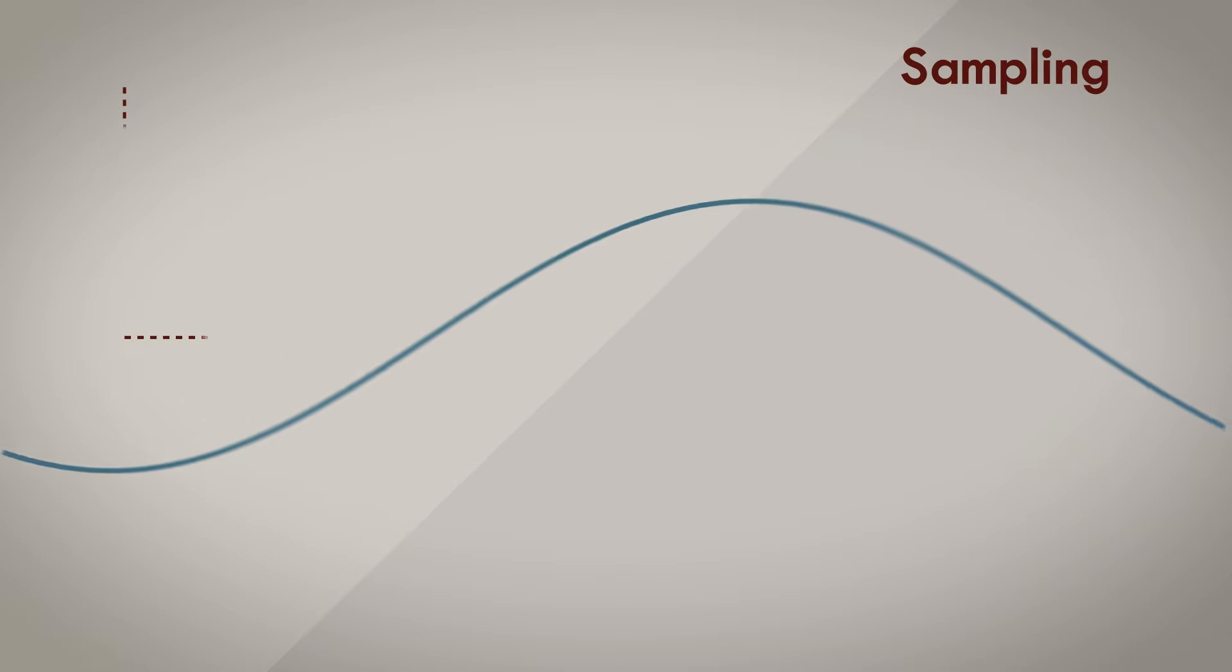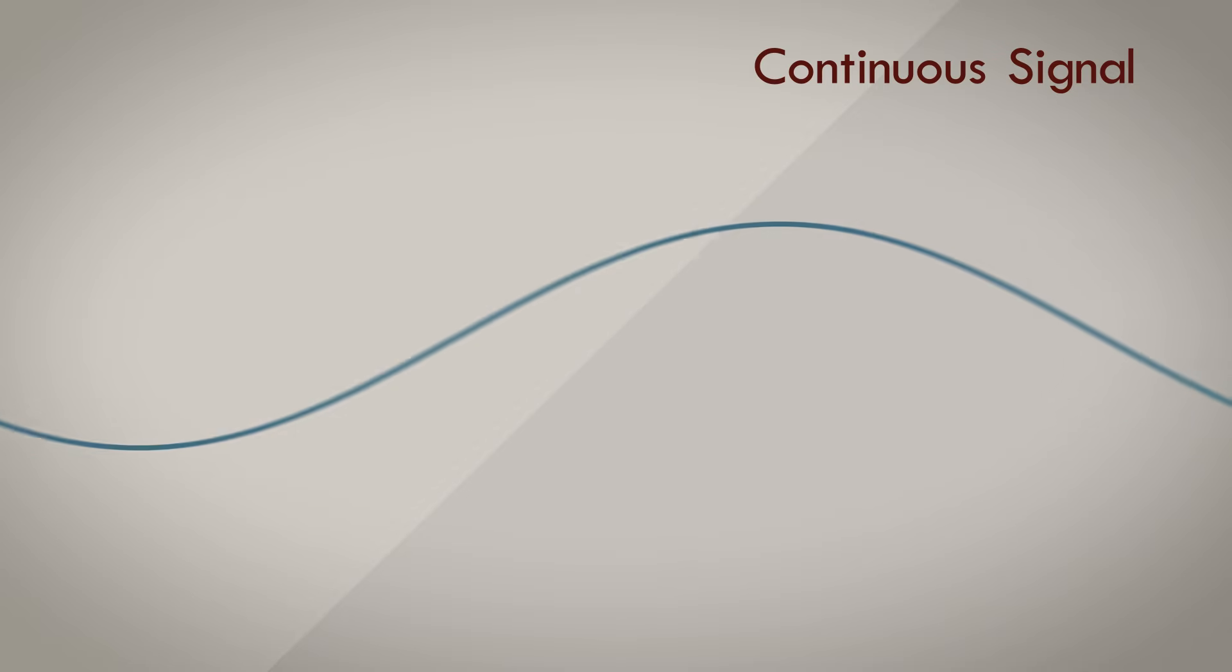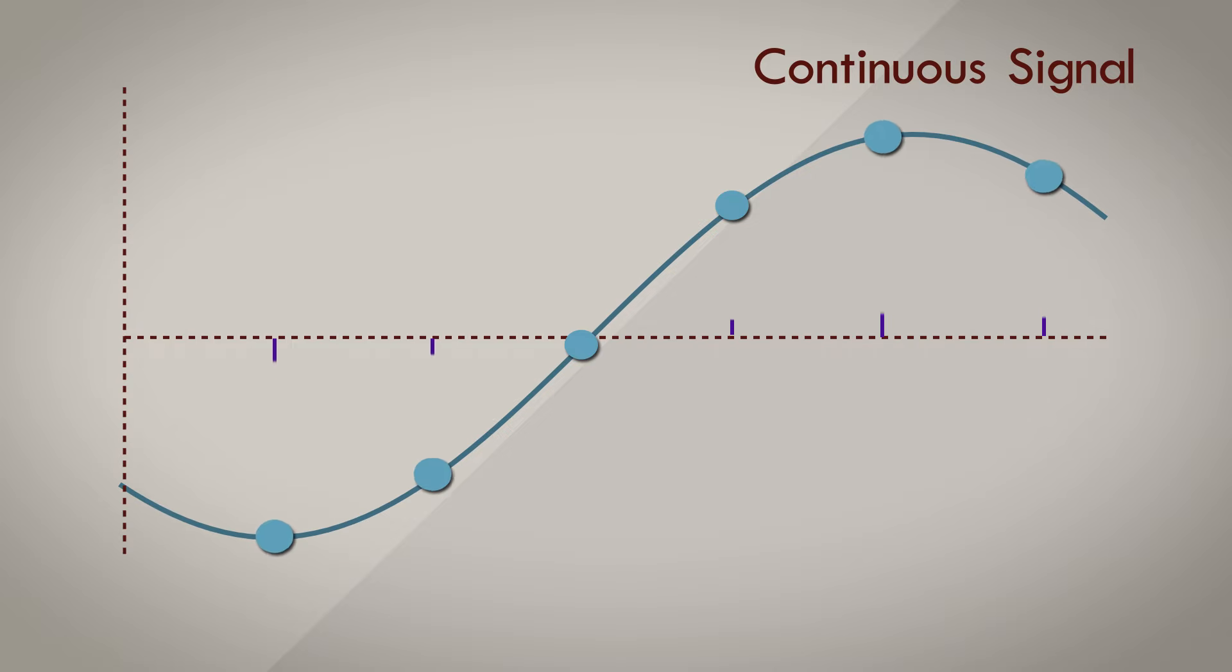An analog signal is a continuous signal. There are infinitely many points between two time intervals where the signal can be measured. So to have any chance in representing analog signals in the digital domain, we sample the signal at discrete points in time, and ignore the rest.